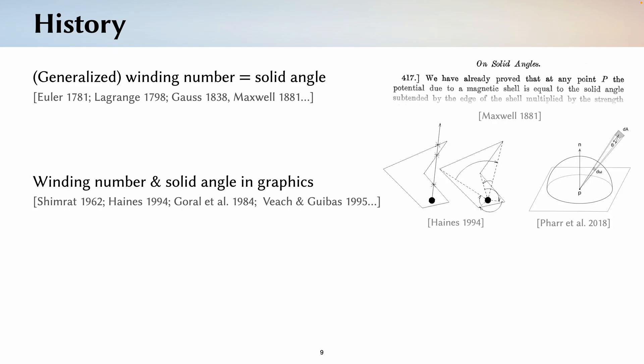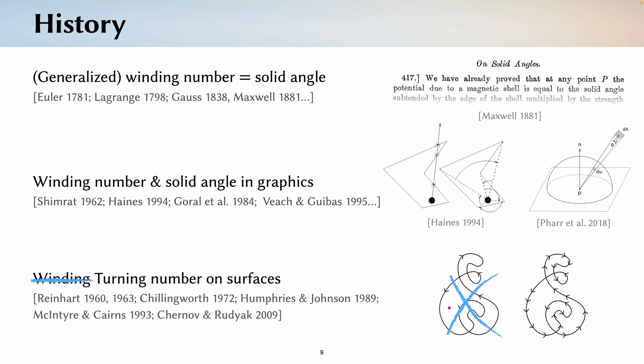And winding number and solid angle have likewise been used in graphics for decades. However, there hasn't been a lot of work about winding number on surface domains. In the math literature, people have thought about something called turning number on surfaces, but this is a distinct quantity from winding number.